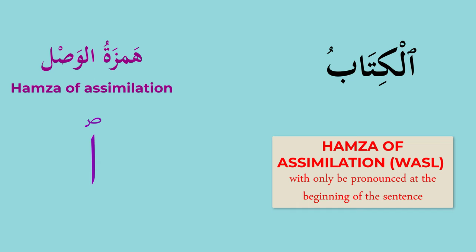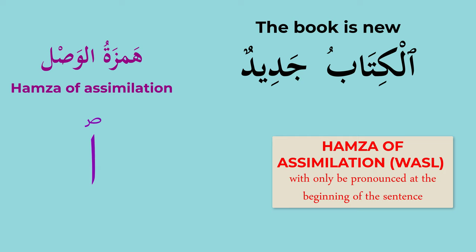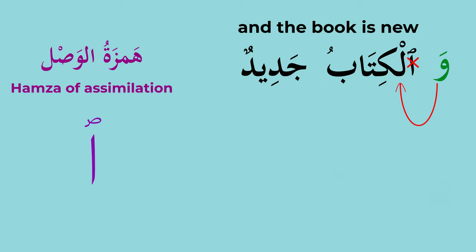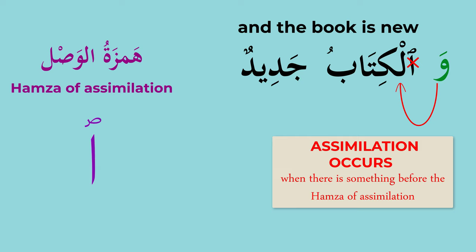If I say Al-Kitabu and then write Jadidun, the sentence begins with Al-Kitabu. But suppose I add 'Wa' in front — now what will become? Wal-Kitabu. Why did you not pronounce the Hamza? The reason is that it is Hamzatul Wasan — it gets assimilated. When does it get assimilated? When a particle comes in front of it. So 'Wa' is a conjunction. When it came in front of Hamzatul Wasan, you did not pronounce it; you say Wal-Kitabu.